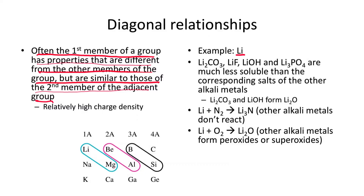Similarly, lithium carbonate and lithium hydroxide can combine to form lithium oxide, just like magnesium carbonate and magnesium hydroxide can form magnesium oxide. Also, lithium can react with nitrogen to make lithium nitride, whereas other alkali metals don't react with nitrogen that way. Lithium can also combine with oxygen to make lithium oxide, whereas other alkali metals react more violently with oxygen and form peroxides or superoxides. In this sense, lithium behaves more like the alkaline earth metals than the alkali metals themselves.